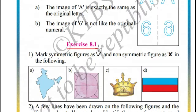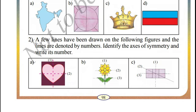Let us see exercise 8.1 number 2. A few lines have been drawn on the following figures, and the lines are denoted with numbers. This axis is denoted with 1, this axis is denoted with 2 for this example. Similarly for B and C. Identify the axes of symmetry and write its corresponding number. Let us see example A.